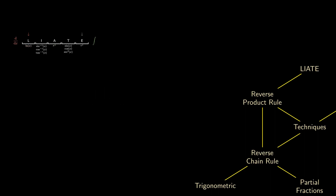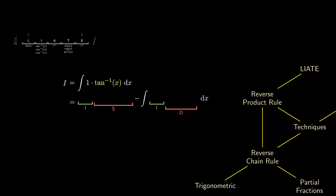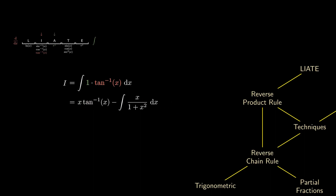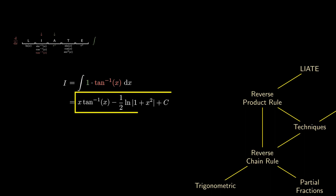We can repeat this idea for the inverse tangent of x. We write the inverse tangent as 1 times the inverse tangent. Since 1 is rightmost, we integrate that into x. We keep the tangent inverse and differentiate it to get 1 over 1 plus x squared. We manipulate the second term to make sure that the numerator is the derivative of the denominator. Integrating that gives us the logarithm of 1 plus x squared. That is our final integral.